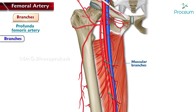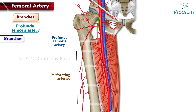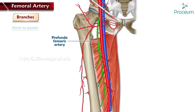The muscular branches supply the muscles as their name implies. The perforating arteries are four in number, numbered from above downward as first, second, third, and fourth, with the fourth being the continuation of the profunda femoris artery.